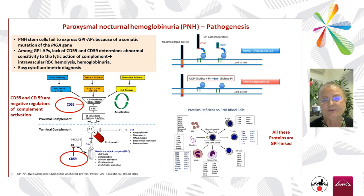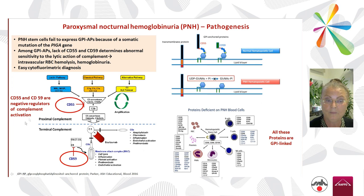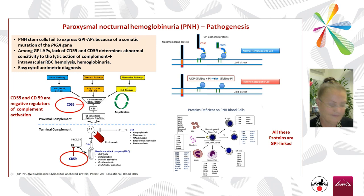Now we move to PNH — a quick refresh of the pathogenesis. The disease is due to the failure of stem cells to express GPI anchor proteins because of a somatic mutation in the PIG-A gene. Among these GPI-anchored proteins, there are CD55 and CD59, which are negative regulators of complement activation — CD55 acting at the C3/C5 convertase level and CD59 at the end of the cascade.